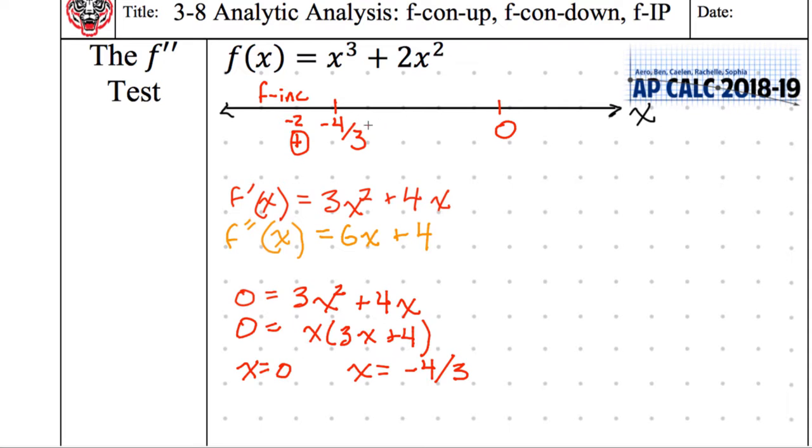What's a good number to plug in in between negative 4 thirds and 0? Negative 1. Is it positive or negative? Negative. So that means it's f decreasing. And let's give this one up to Ben. What point should we plug in over here on the right? One. Positive, because there's no negatives in the equation. So that means it's f increasing.